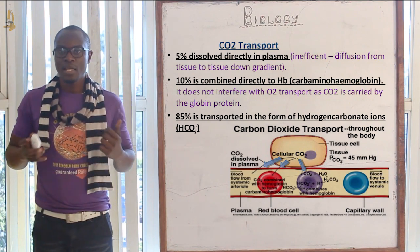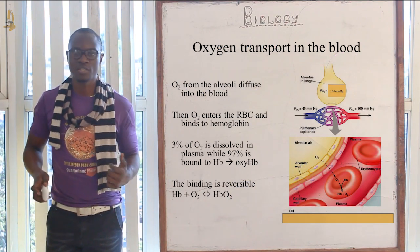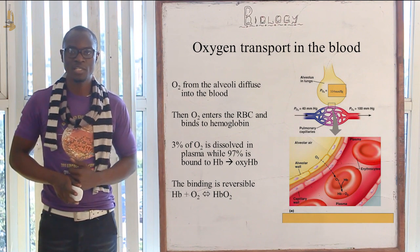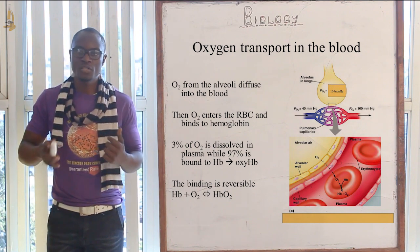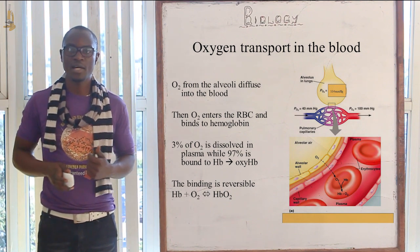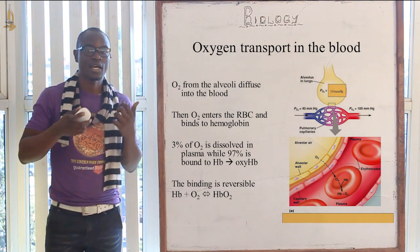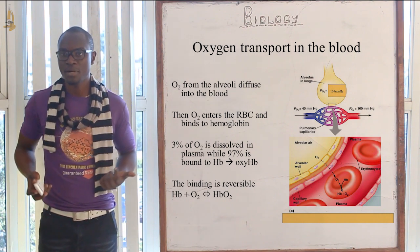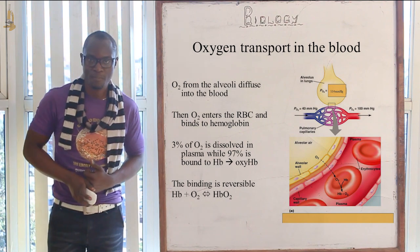Now let's look at the transportation of oxygen. Oxygen diffuses into the alveolar capillaries down the concentration gradient across the capillary wall. The fluid surrounding the capillaries is called the plasma.